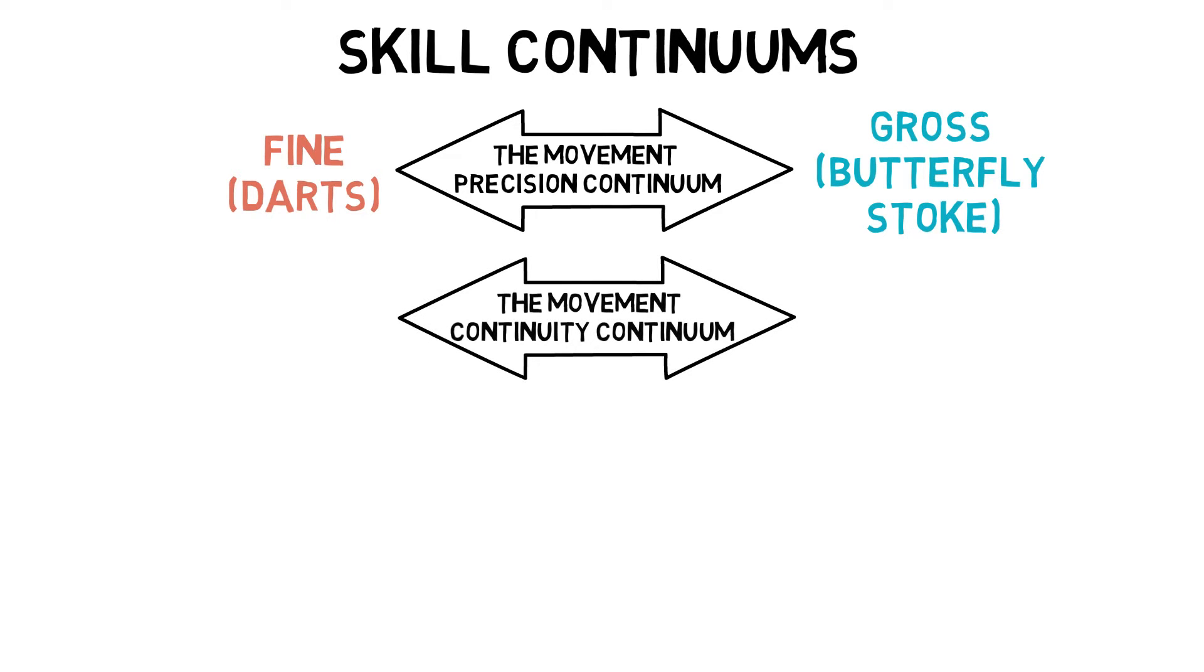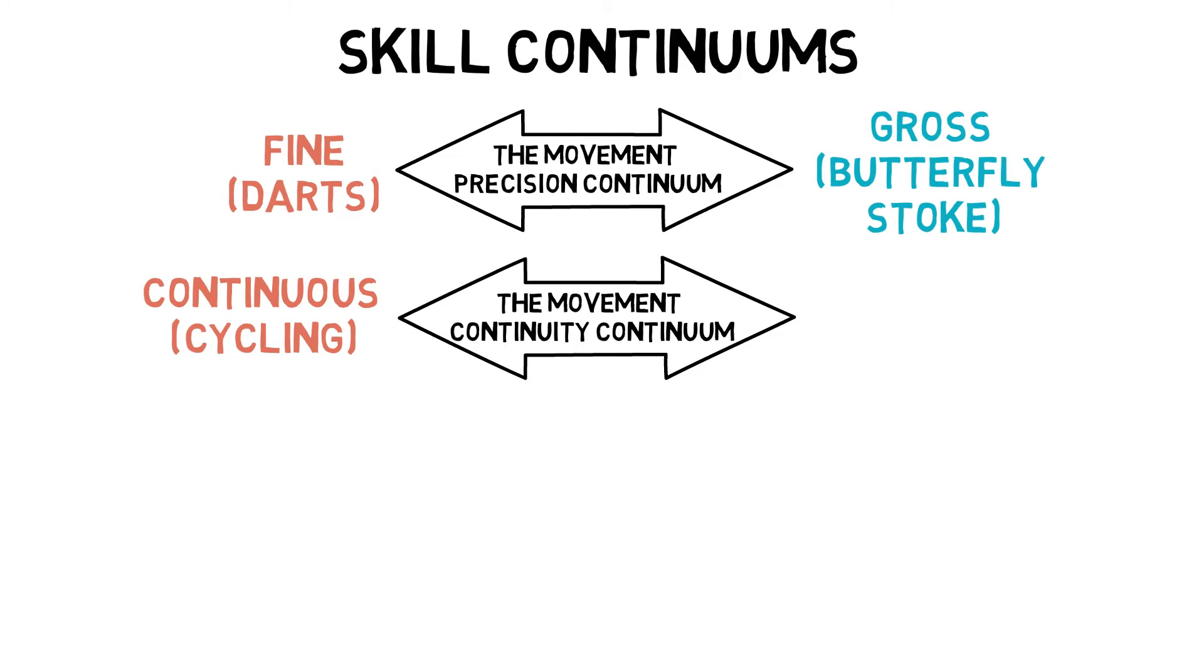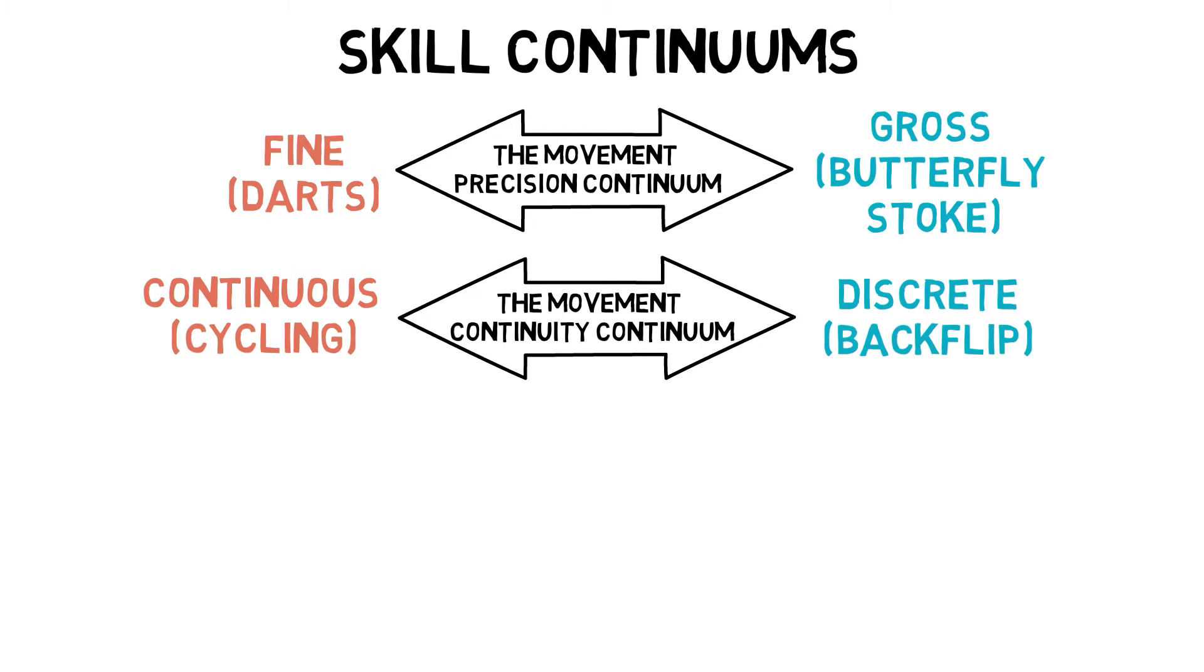The movement-continuity continuum deals with continuous skills, which are repeated movements such as cycling, and discrete skills, which have a defined start and finish, such as a backflip.